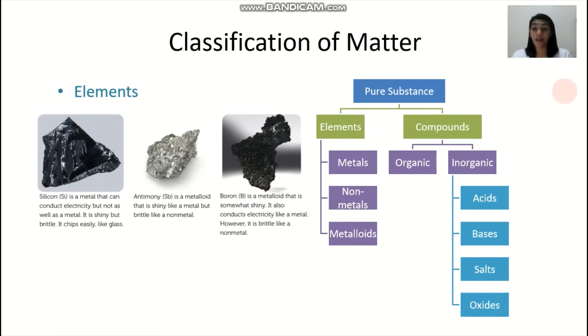Lahat na makikita sa periodic table. Now compounds, now examples of our elements here, we have your silicon, antimony, and boron. Now different types of elements, you have your metals, nonmetals, and metalloids. This will be discussed in another video.